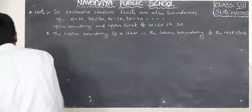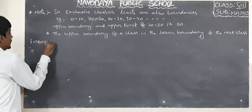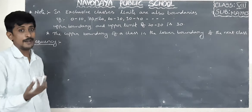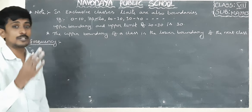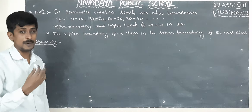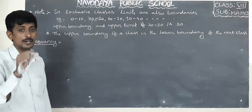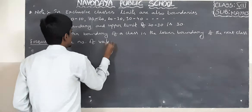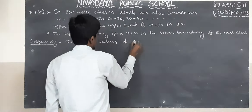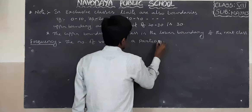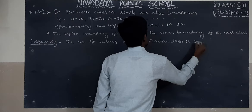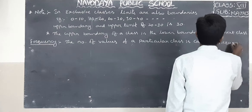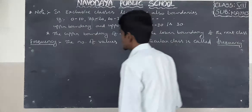Next — frequency. How many number of students are in each group? For example, if an exam is conducted with 0 to 100 marks: how many students got 0 to 10 marks, how many got 10 to 20 marks — that particular number of students is called frequency. The number of values of a particular class is called frequency.